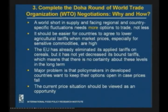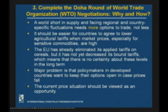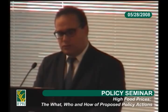The final point is the WTO negotiations and how important they are. Although it is the last topic I am discussing, I think it is one of the most important. In a period of short supply, it is critical to open all trade options, not reduce them. It should be easier for countries to agree to lower agricultural tariffs when market prices — especially for sensitive commodities — are high. The EU has already eliminated its supply tariffs on cereals, but has not yet decreased its bound tariffs, meaning there is no certainty about these levels in the long term. The major problem is that policymakers in developed countries want to keep options open in case prices fall. The current price situation should be viewed as an opportunity — not a reason to reject — what the Doha negotiations should accomplish.